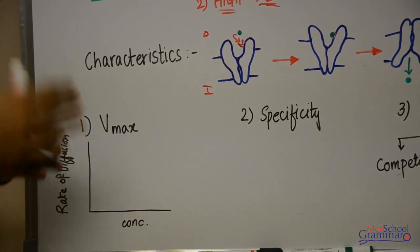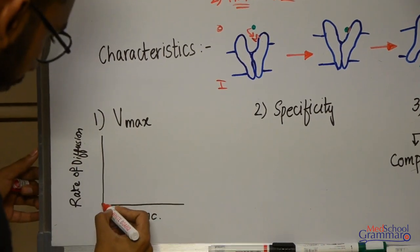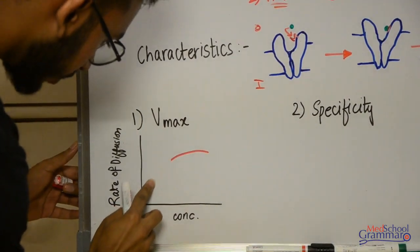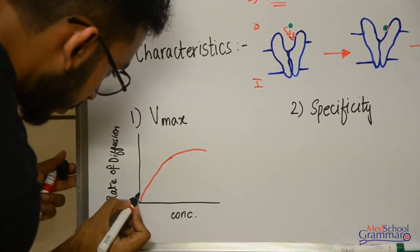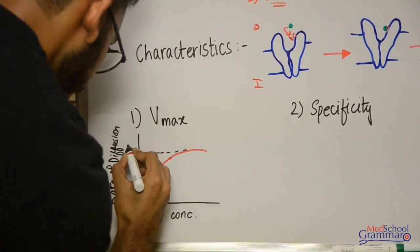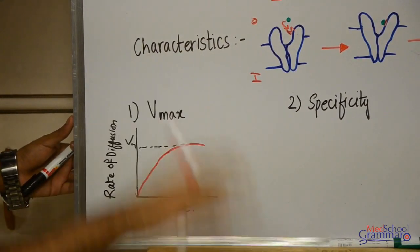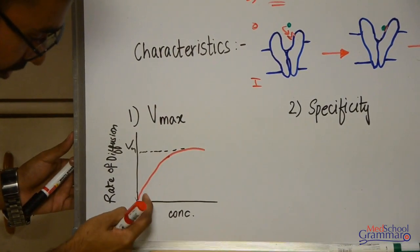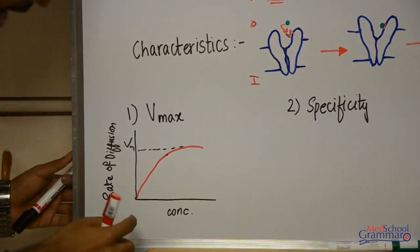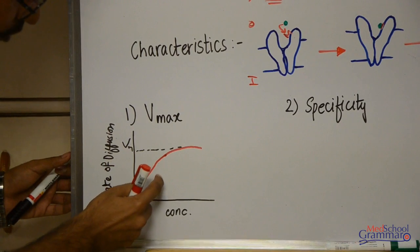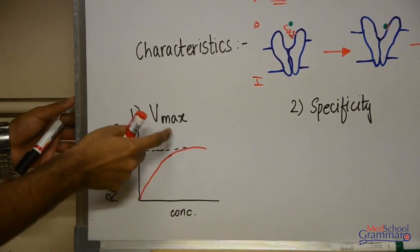Facilitated diffusion has three basic properties: first is Vmax, second is specificity, and third is inhibition. Vmax means maximum velocity or the maximum rate of diffusion. If we plot a graph of rate of diffusion against concentration of the molecule, the graph looks like this: initially when the concentration of the molecule is low and we gradually increase it, the rate of diffusion increases linearly — there is direct proportionality. But as we keep increasing the concentration, the rate of diffusion reaches a maximum value, known as Vmax.